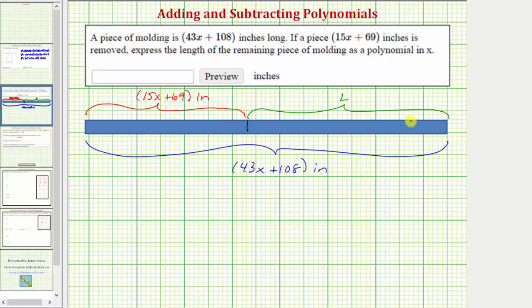So to find the length of L, we'll take the total length and subtract the length we're removing. So we would have L, the length of the remaining piece, equals the quantity 43x plus 108 inches minus the quantity 15x plus 69 inches. And we'll leave the units off until we find the difference.